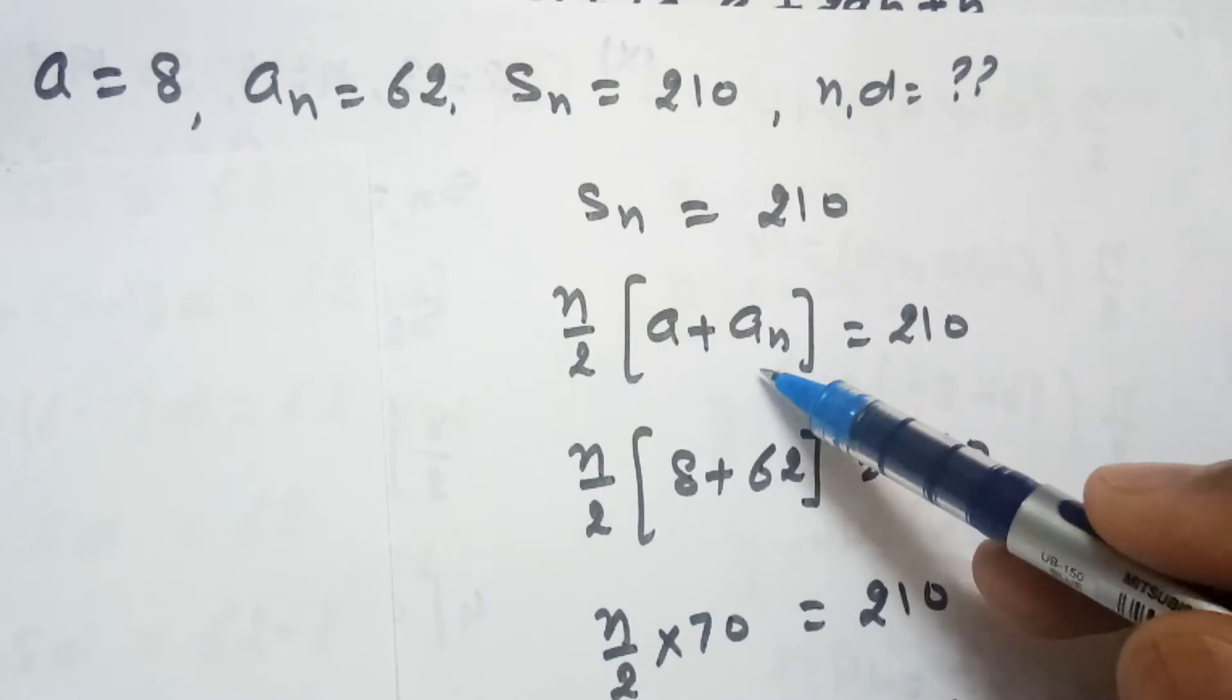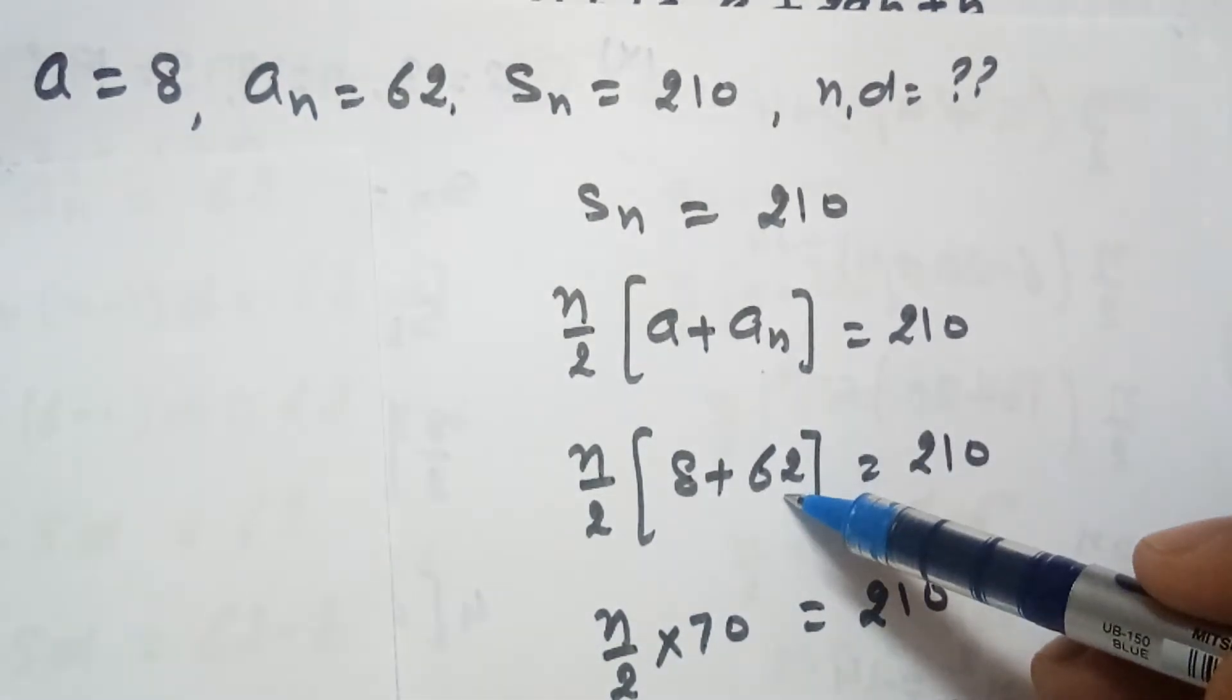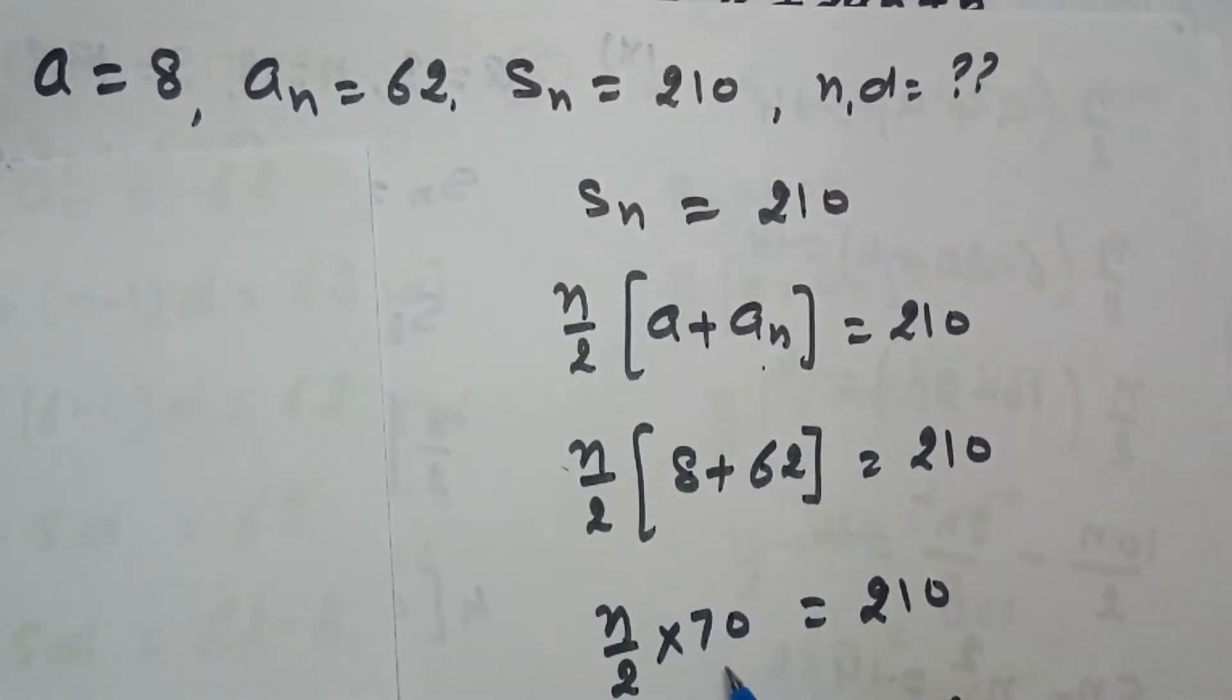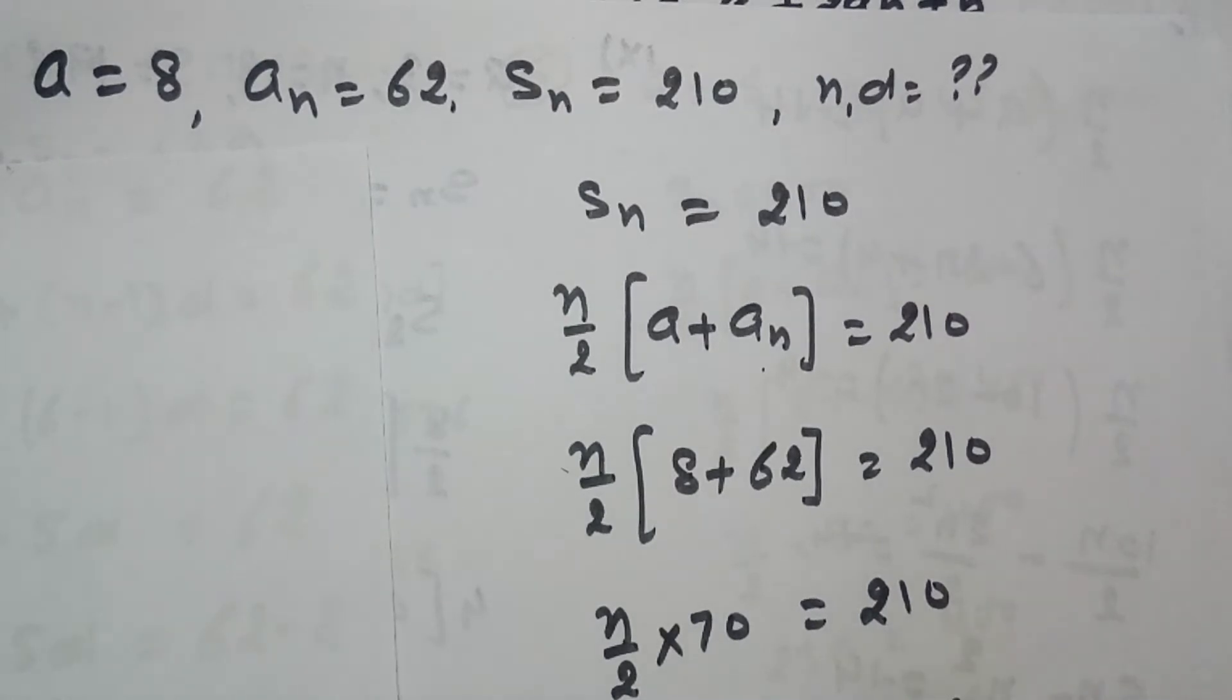Now A is given which is 8, AN last term is given 62. So we will calculate number of terms from here. So 8 plus 62 equal to 70. So N by 2 into 70 equals to 210.